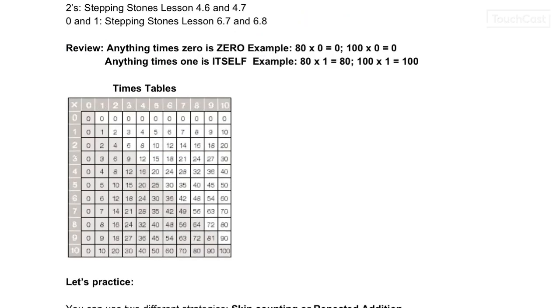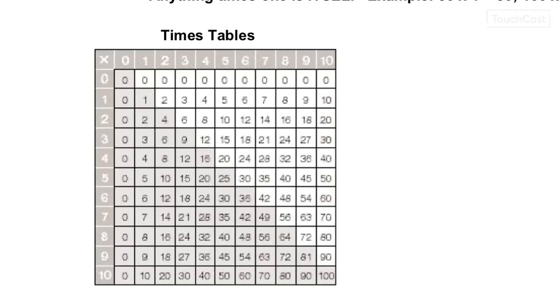Everything else on here is a review. Anything times zero is zero. Anything times one is, except for zero times one. Do you remember which one would win? Yes, the zero overrules the one. Here's our times table again. If you need to refer to it, feel free. It's only to the tens, but those are not all the facts in the world, but feel free to use this if you'd like to until you memorize all your facts.